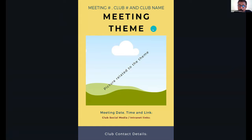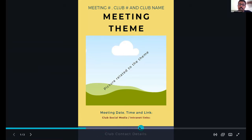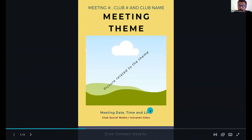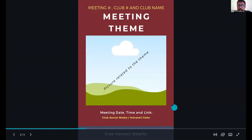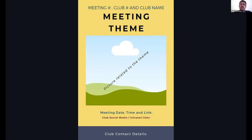Put a picture related to the theme — this is optional. Then give the meeting date, time, and link. If there is any social media presence for your club, include that, and at the bottom give club contact details — usually the president, VPPR, or VP Membership. This is a light color with dark font theme. The next one is the opposite — dark background with light font.